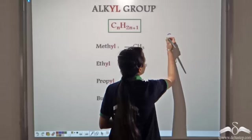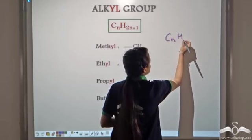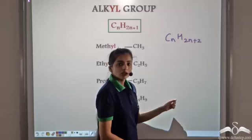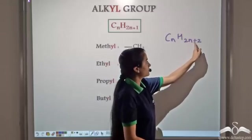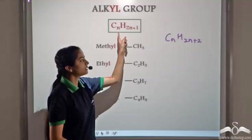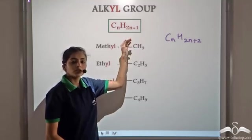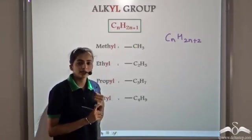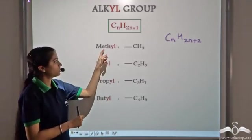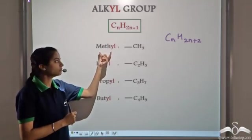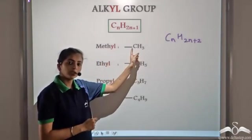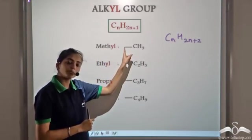We know the general formula of alkanes is CnH2n+2. If we remove one hydrogen atom, we get CnH2n+1. So whenever we remove one hydrogen atom from any of the alkanes, we get the alkyl group. If we remove one hydrogen atom from methane, we get methyl, that is CH3. The fourth place is vacant and any group can be added here.